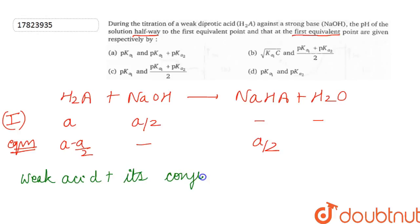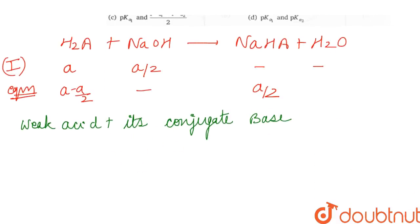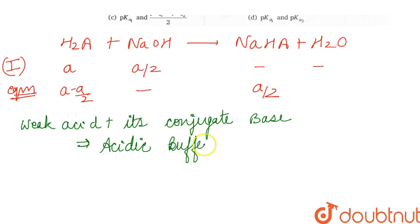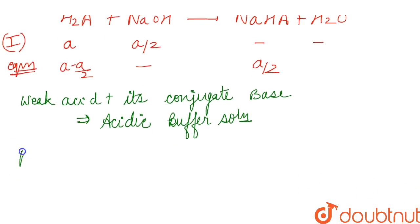We have A/2 of acid and A/2 of its conjugate base — these form a weak acid and its conjugate base. This gives us an acidic buffer solution. Here we can represent pH using the formula: pH equals pK₁ plus log of concentration of salt (NaHA) upon concentration of acid (H₂A).